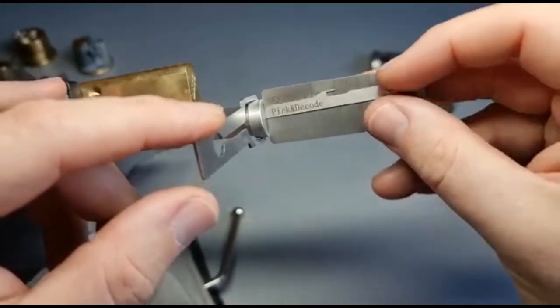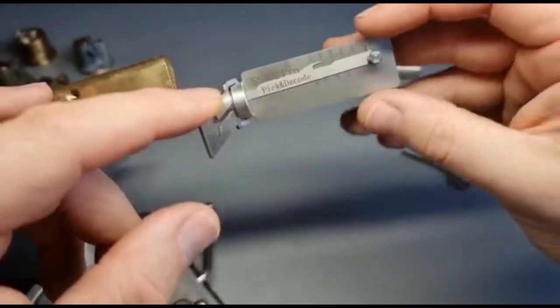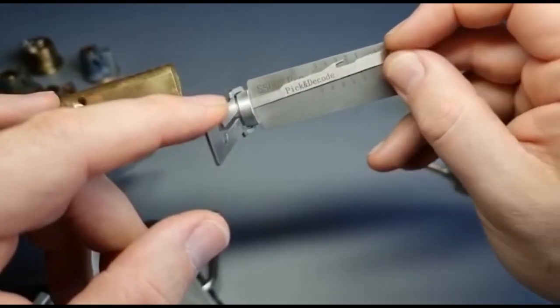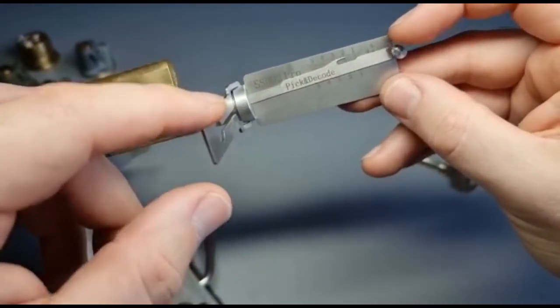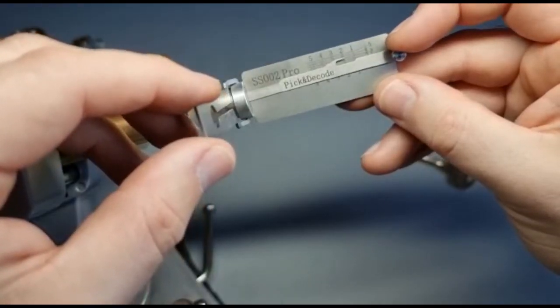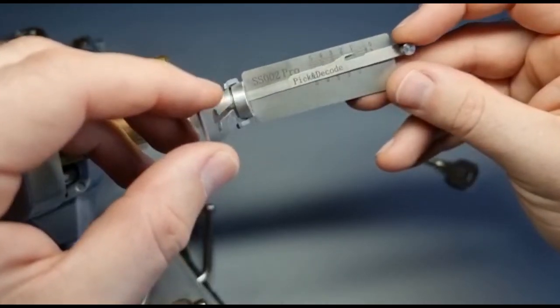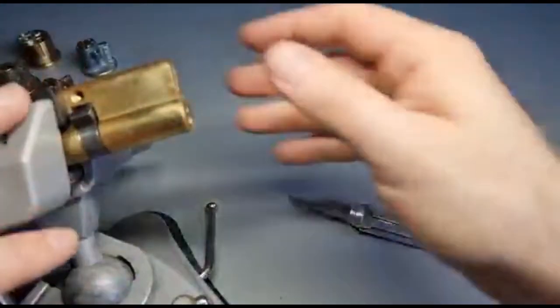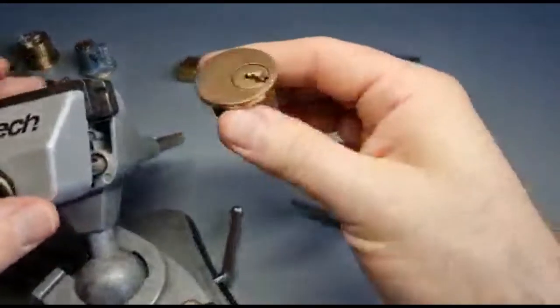I've had some locks not pick anticlockwise. Now, you might say, well, why is that a problem? Well, it's not a problem necessarily on a vehicle. But you might have a lump of wood on a door frame stopping you from picking that lock. See where I'm coming from? So if you can't pick it anticlockwise, you've got problems.